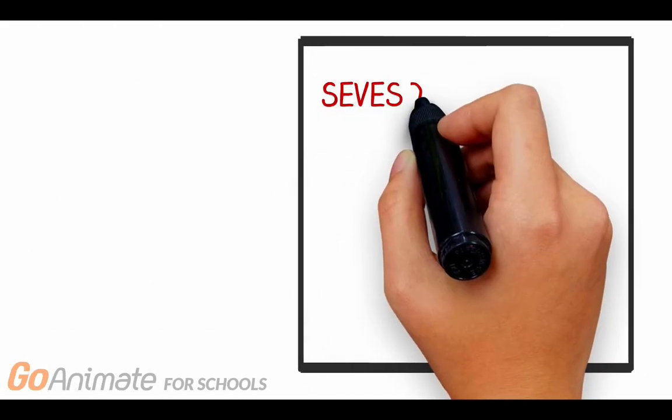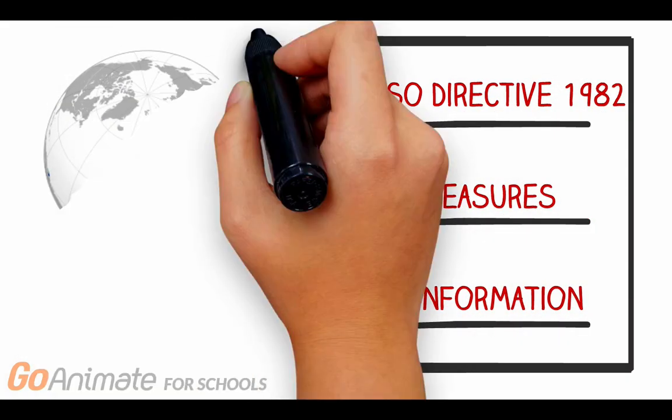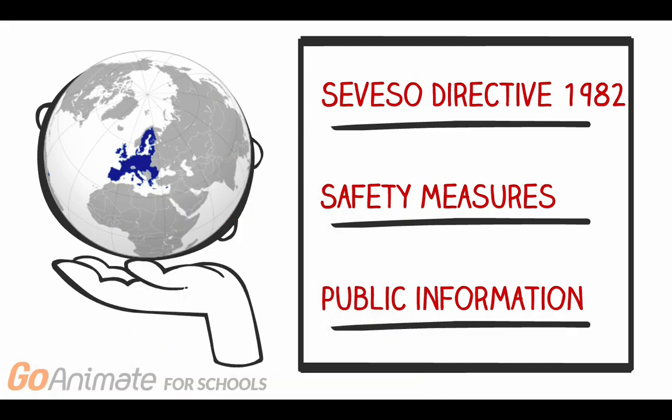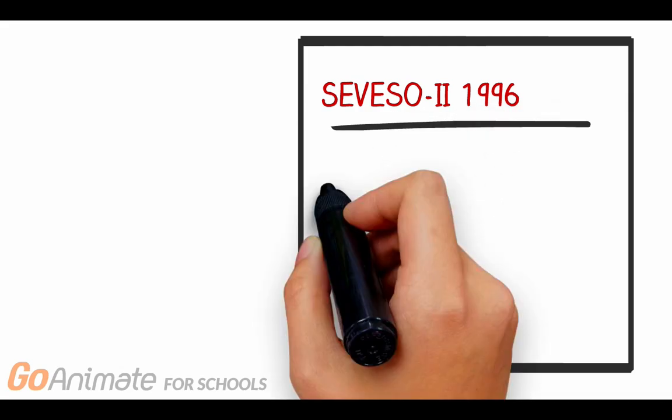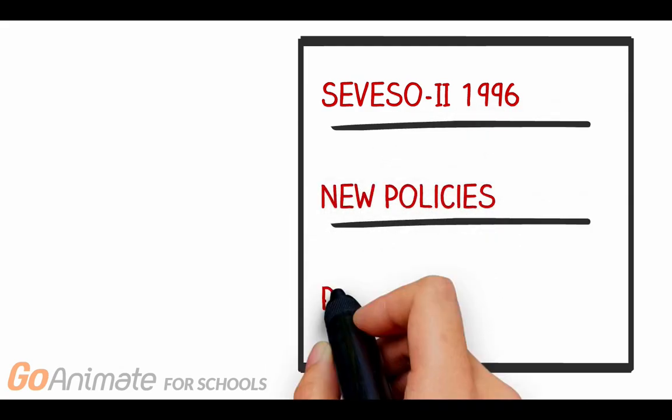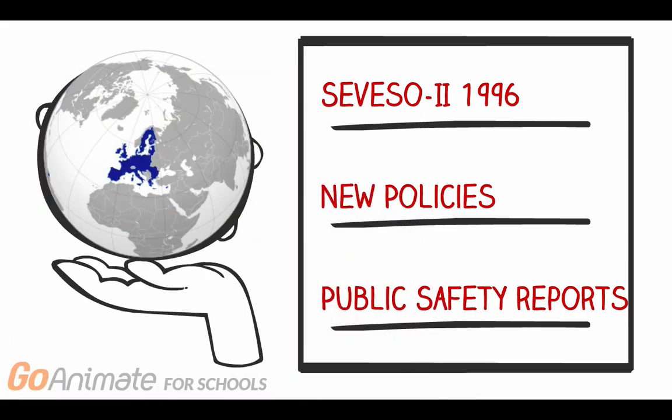The first Seveso Directive was adopted in 1982. This identified dangerous industrial substances and ensured manufacturers and authorities had safety measures in place, as well as quick communications of information to the public if a disaster were to occur. The second Seveso Directive was passed in 1996. This updated safety policies, increased policing of these regulations, and increased the publicity of safety reports.